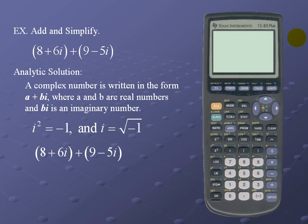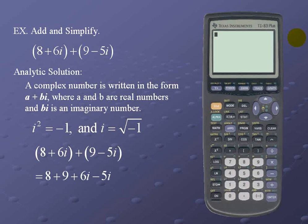So when we add the two complex numbers, we simply add the real numbers and combine the imaginary numbers, for a result of 17 + i.